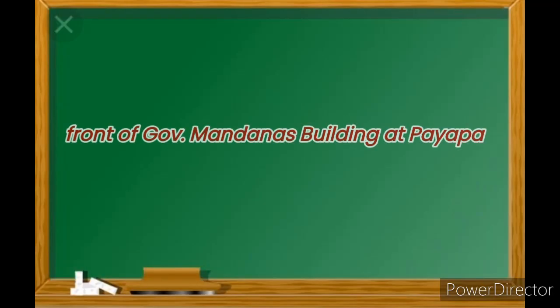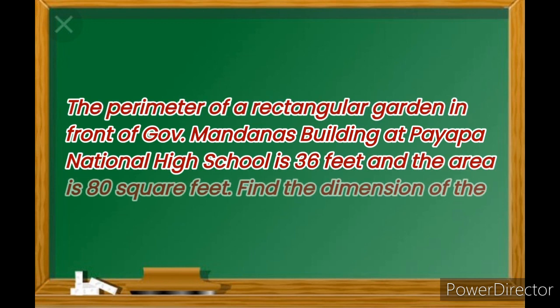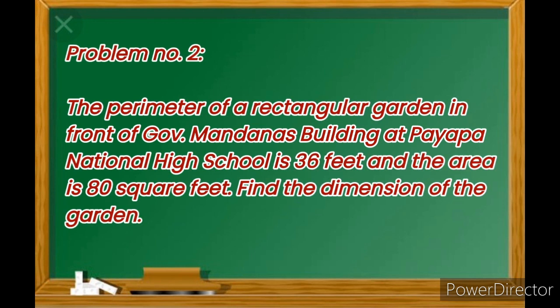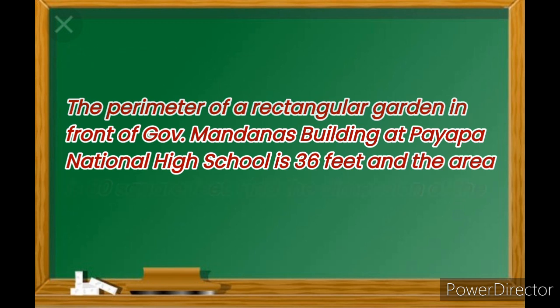Problem number 2. The perimeter of a rectangular garden in front of Governor Mandana's building at Payapa National High School is 36 feet and the area is 80 square feet. Find the dimensions of the garden.